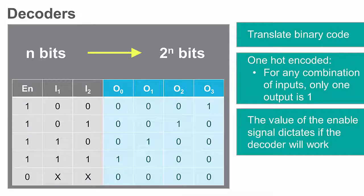Some decoders have an enable signal that controls the circuit. If the enable signal is active high, like in this example, the decoder will only work when the enable signal is of value 1.